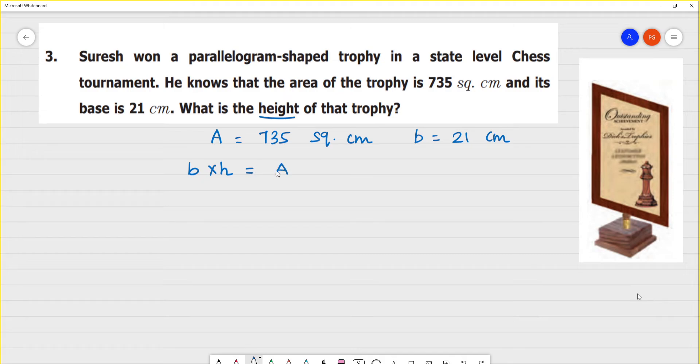Base into height is equal to area of the parallelogram. Base is 21 centimeters. Height is equal to 735 square centimeters. Of course, centimeter square.